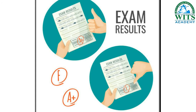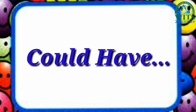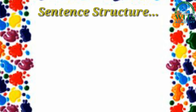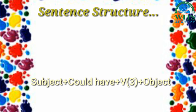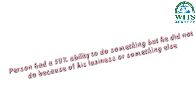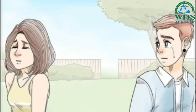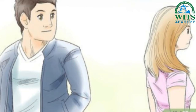Now come towards 'could have.' Could have is the past action of the modal word 'could.' Sentence structure: subject plus could have plus verb third form plus object. It shows that the person had around 50% ability to do something but did not do it because of laziness or something else. For example, I could stop her but in my anger I could not stop her.